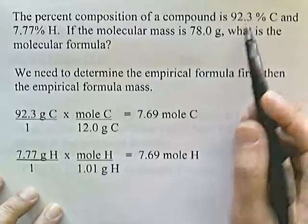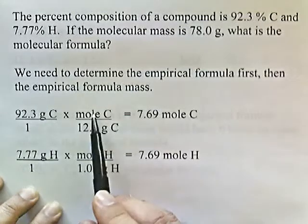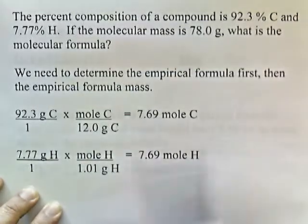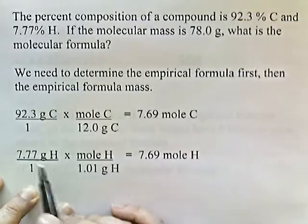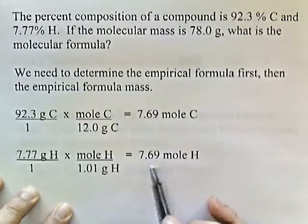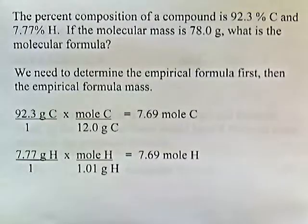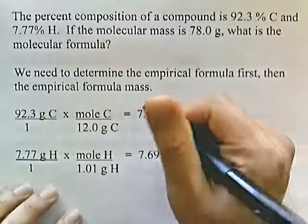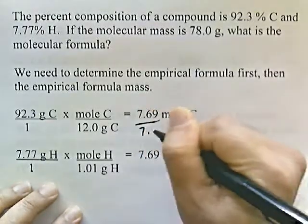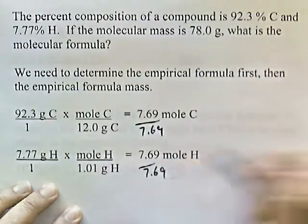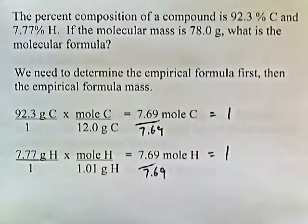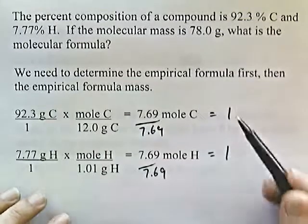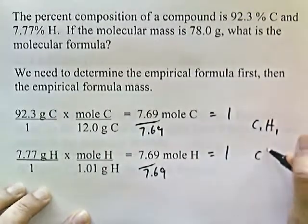Using the percent composition: 92.3 grams of carbon divided by 12 gives moles of carbon. Then 7.77 grams of hydrogen divided by 1.01 gives 7.69 moles of hydrogen. The next step is to divide by the smallest number of moles. Both values are 7.69, so we divide both by 7.69, giving a ratio of 1 to 1. So the ratio of carbon to hydrogen is 1 to 1, and the empirical formula is CH.